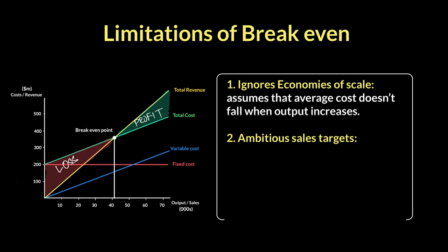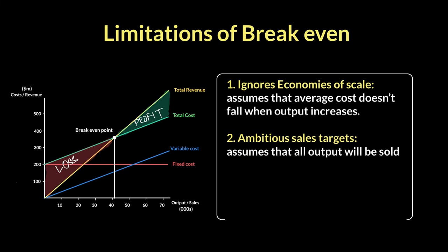The second limitation is that it sets very ambitious sales targets. If a business has made 70,000 units, breakeven analysis assumes they'll be selling all of them within the month they plan to produce them. It assumes that all output will be sold — but we know that is not always true. Companies are often left with unsold stock that is rolled over to the next month or the next year, but breakeven assumes nothing will be left unsold.